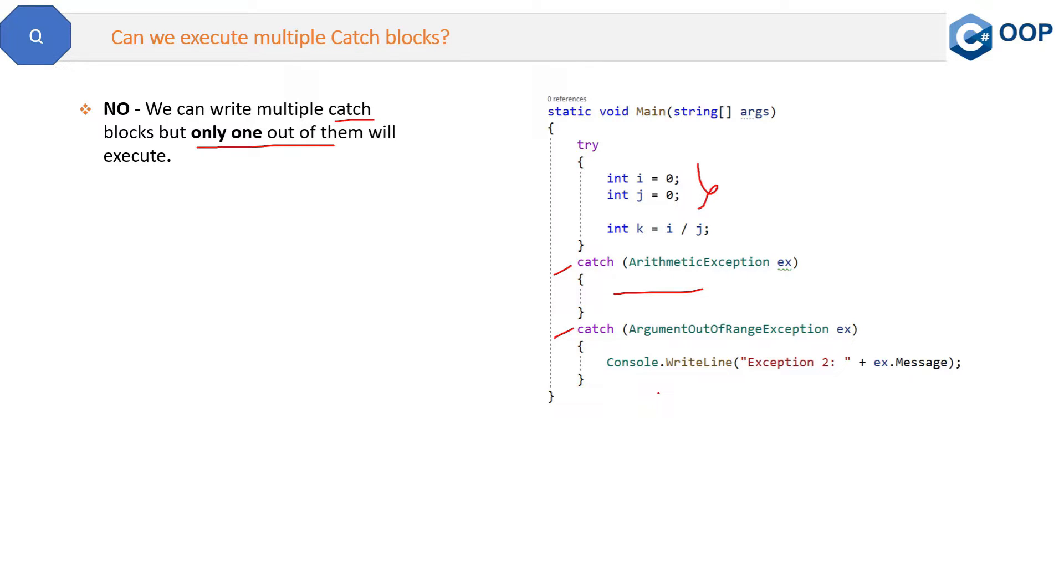So in any case, only one type of exception will occur and that will go inside only one catch block. So you can ask why we have written multiple catch blocks here. That can be another question. The reason is you might want to handle different errors in different ways.